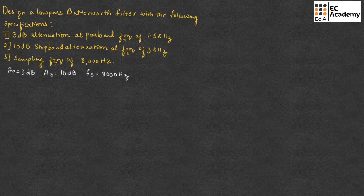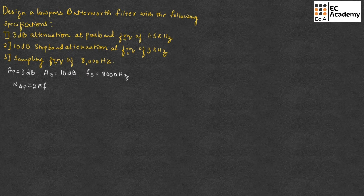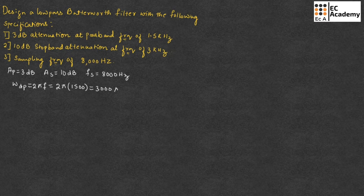First, let us calculate Omega_dP, which is the passband frequency of 1.5 kHz. That can be given as 2*pi*f, where f is 1.5 kHz. Substituting that value, it will be 2*pi into 1500, which gives us 3000*pi radians per second.